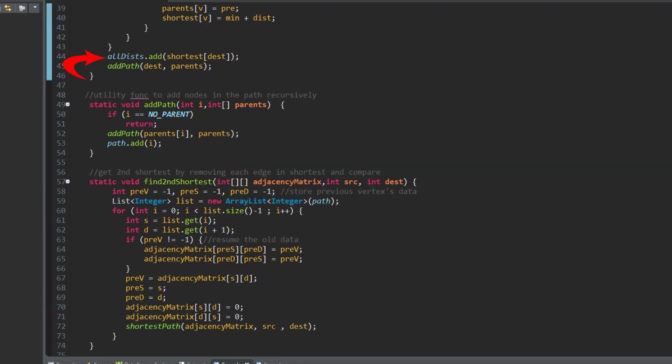At the end of the function, we add the shortest distance to the return set. We also call addPath. AddPath is a recursion function to add vertices in the shortest path by using the parents array. This path will be used for find second shortest distance.